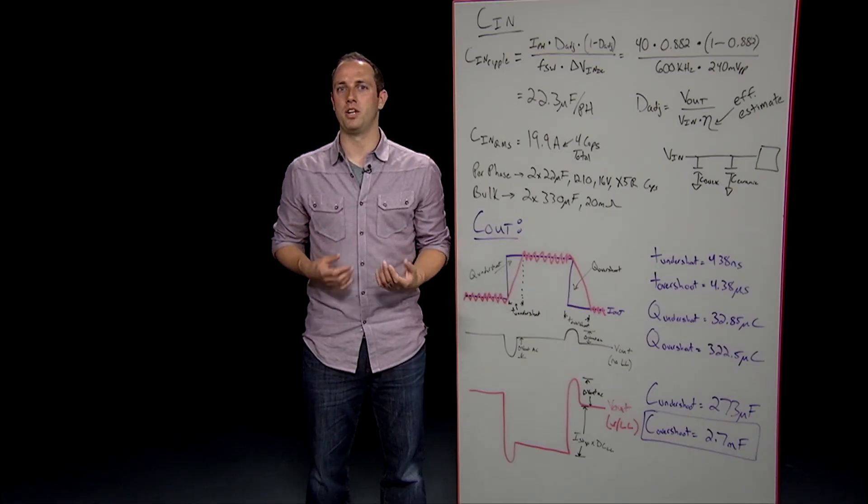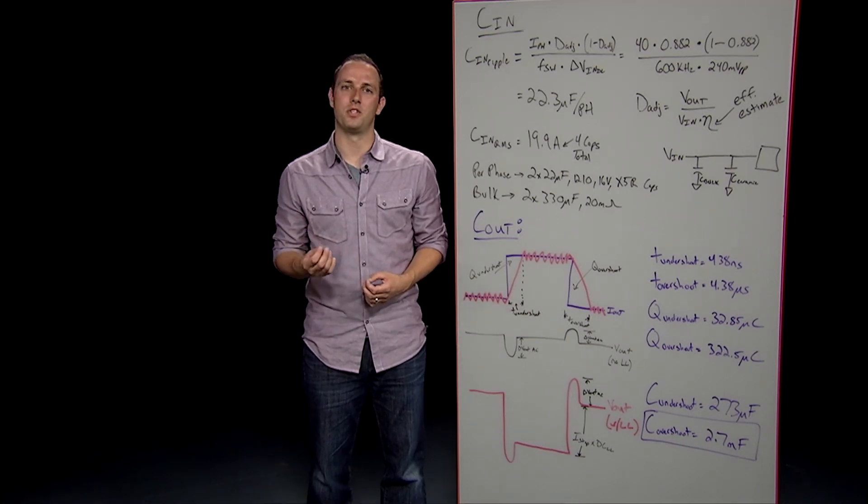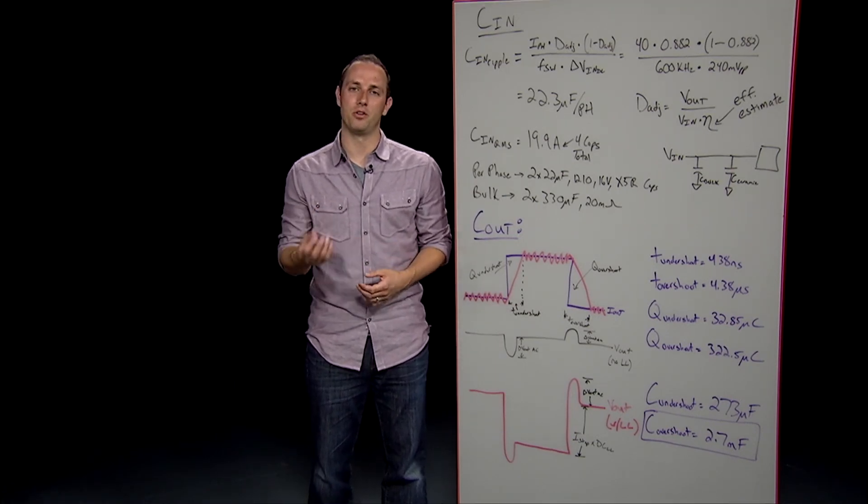Calculating the bulk capacitance isn't as straightforward as it is for the ceramics, and the best method I've found is using the steps outlined in reference 10 of the app note. From that document, we calculate we need two 330, 20-milli-ohm bulk caps to hit the AC targets of our design. Again, bulk caps are somewhat of an art, and these values should be considered starting points for your design and fine-tuned on the PCB while you're doing your validation.